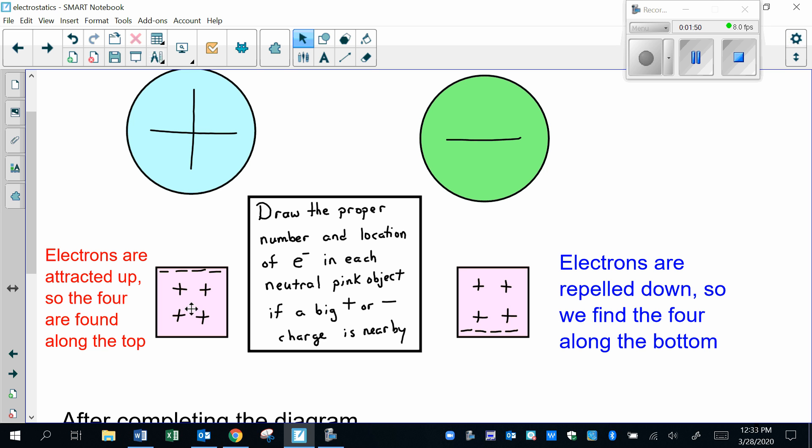You've been told repeatedly in this question that the pink items—maybe these are the little bits of paper in the lab, could be anything—these little bits of paper are neutral, which means that if there are four positive signs drawn as the structure, I need to have four negatives. Where those are going to be drawn is the next question, but I have to have four if it is indeed neutral.